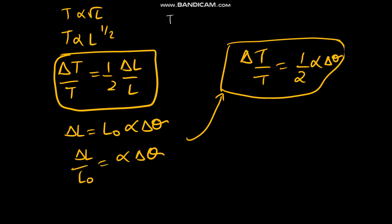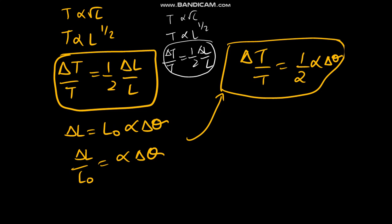The time period is proportional to √L, so T is proportional to L^(1/2). Therefore ΔT/T = (1/2)(ΔL/L). They will ask questions such as: if the length of the simple pendulum is increased by 2%, how does the time period change? ΔT/T = (1/2)(ΔL/L), where ΔL/L = 2/100.